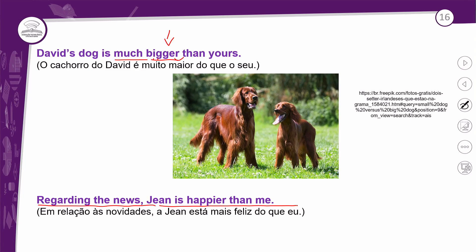'David's dog is much bigger than yours' — o cachorro do David é muito maior do que o seu. Para falar 'muito maior', uso MUCH + BIGGER. O adjetivo BIG segue a regra CVC — termina em consoante-vogal-consoante — então dobro a última consoante e acrescento ER: BIG → BIGGER. 'Regarding the news, Jean is happier than me' — em relação às novidades, a Jean está mais feliz do que eu. HAPPY termina em Y → tiro o Y, acrescento IER: HAPPIER.